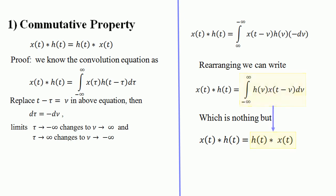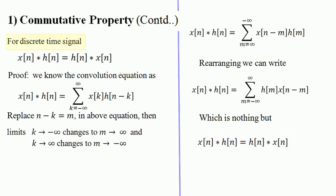This expression looks like a convolution between h(t) and x(t), which can be written as h(t) convolved with x(t) — the same as x(t) convolved with h(t). This can also be proved in the discrete domain: x[n] convolved with h[n] equals h[n] convolved with x[n]. We have x[n] * h[n] = Σ (k from −∞ to ∞) x[k] h[n − k].